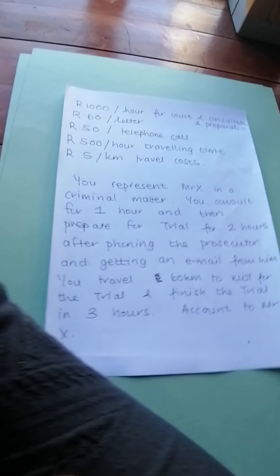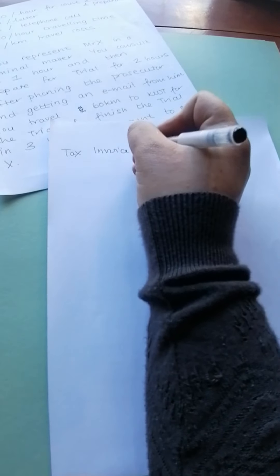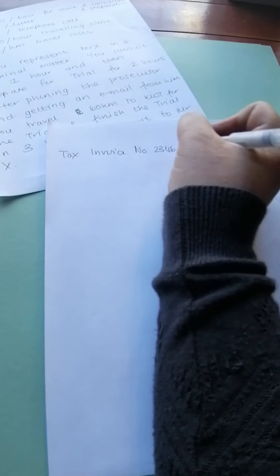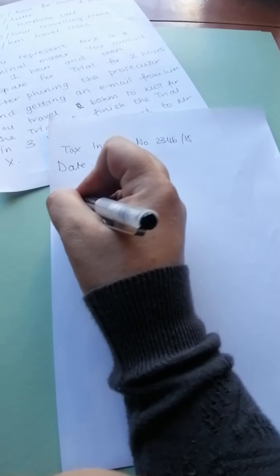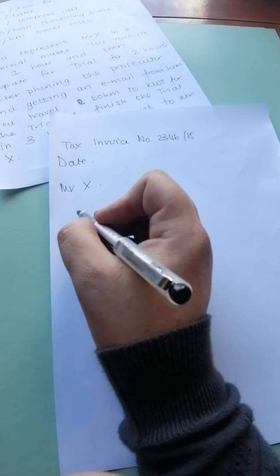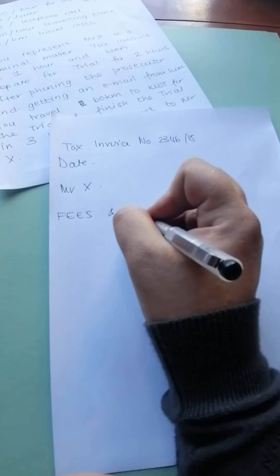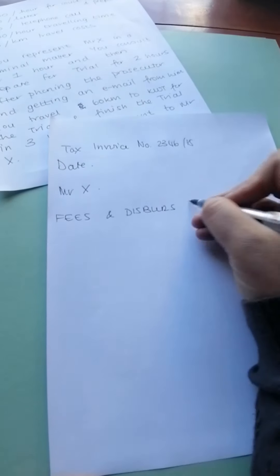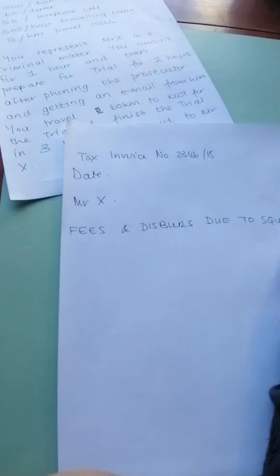On page 44 of your notes is an example of a non-litigious matter, bill of costs. The important part here is that you are going to say: Tax Invoice Number 2346 — or whatever — of 2018, whatever you want to do. Give it a date. Address it to Mr. X. And we'll say fees and disbursements due to Squires, or whatever your firm is called.